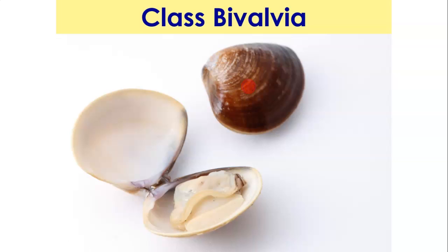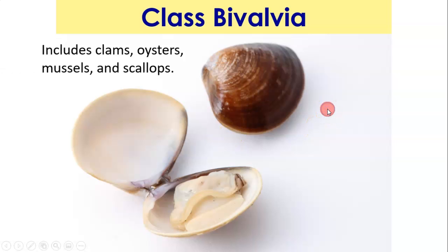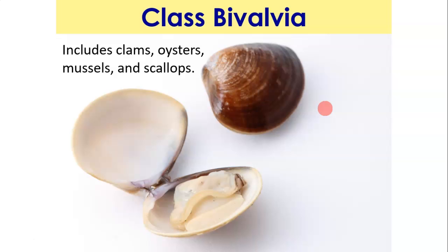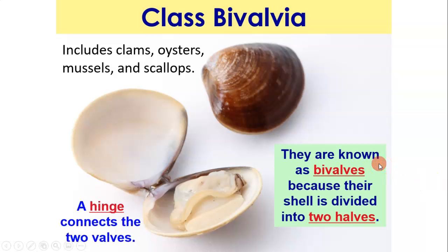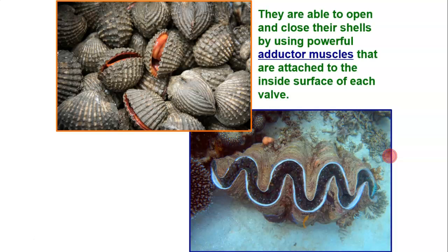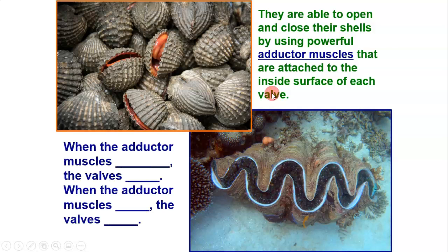Now, class Bivalvia: 'bi' means two and 'valvia' means shell, so they have two shells. This includes clams, oysters, mussels, and scallops. They're called bivalves because their shell is divided into two halves connected by a hinge. They open and close their shells using strong adductor muscles attached to the inside surface of the valve — the shell. When the adductor muscles contract, the shells close; when they relax, the shells open.